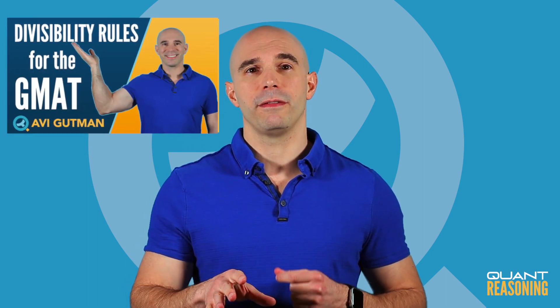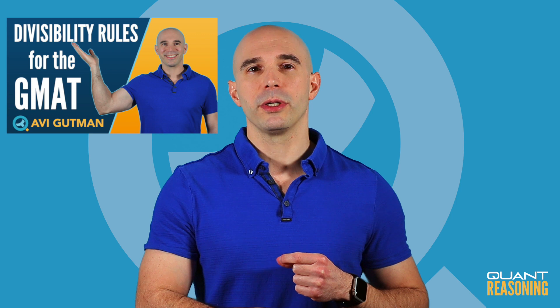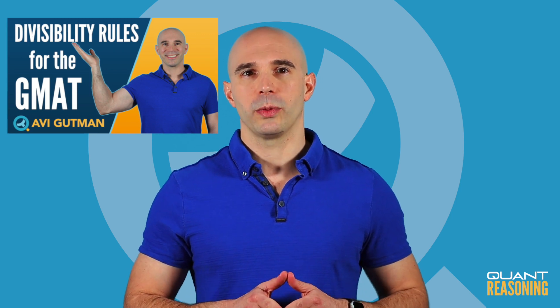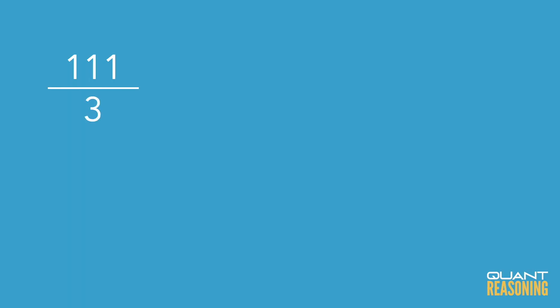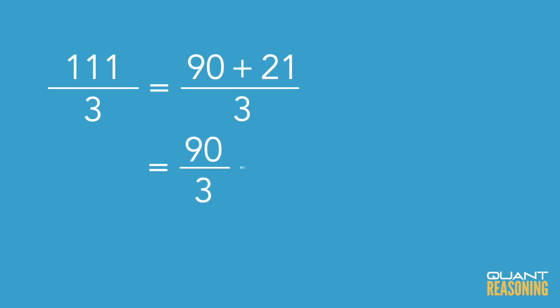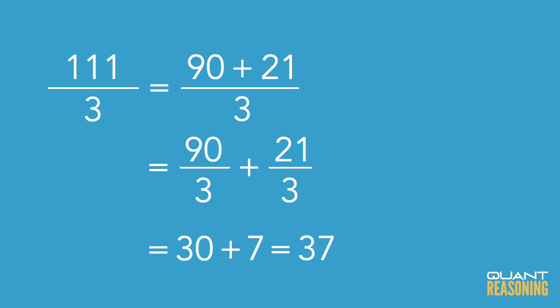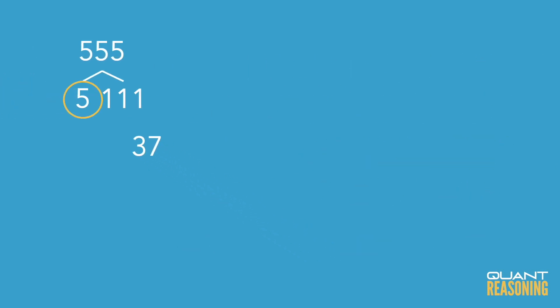I talk about that in a separate video about the divisibility rules, linked below. So I'm going to divide 111 by 3. I'll think of it as 90 plus 21 over 3, and divide each separately — that gives me 37. So 111 is 3 times 37. I'm going to circle the 3 because it's a prime number, and now I'll focus on 37.